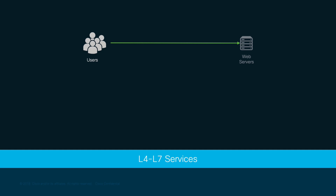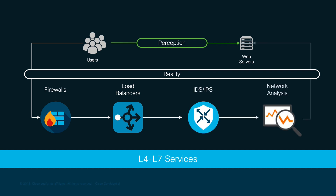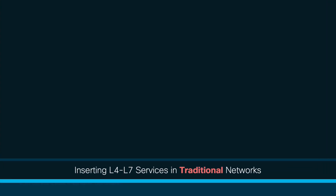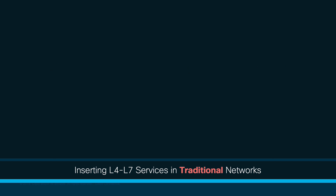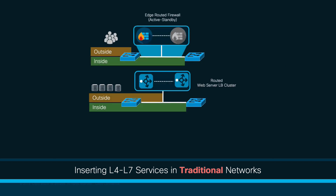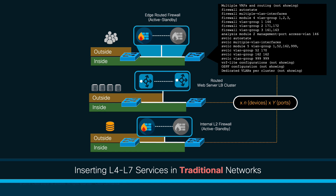When users access an application, many may have the perception that the communication path between them is direct. However, behind the scenes, the reality is more complicated, since the connectivity path often includes redirection to firewalls, load balancers, and many other services needed to preserve security, visibility, and scalability capabilities. Inserting L4-L7 services in a traditional network represents multiple challenges, since devices commonly act as standby or cluster pairs in multiple locations, requiring stitching to the network on a per-device and per-port configuration basis, in either routed or transparent modes, extending each VLAN or VRF to those devices.